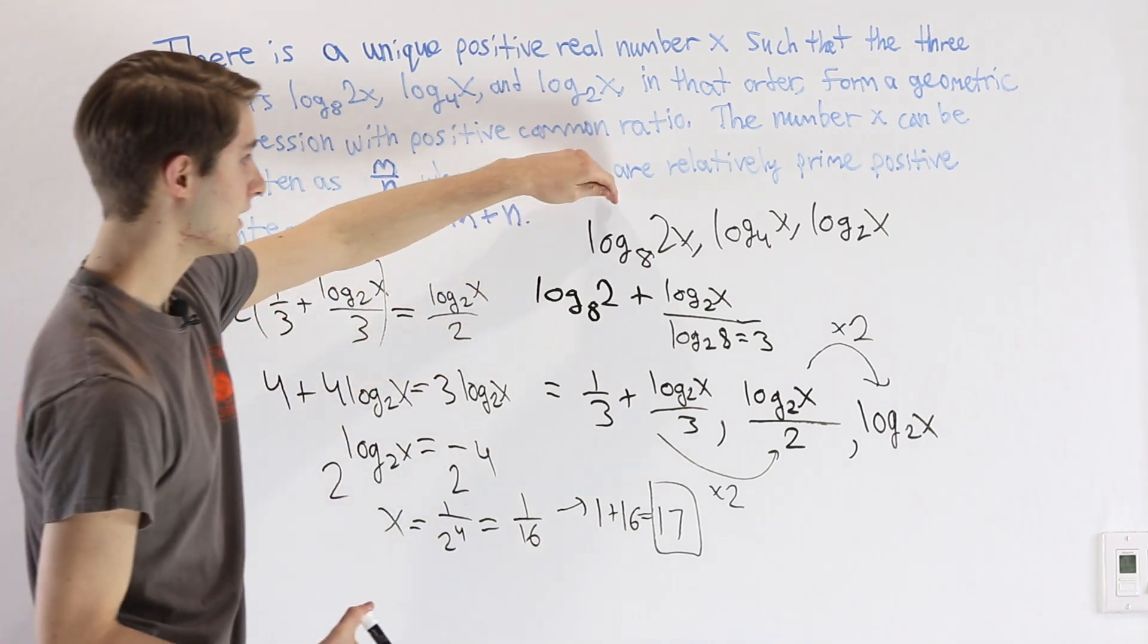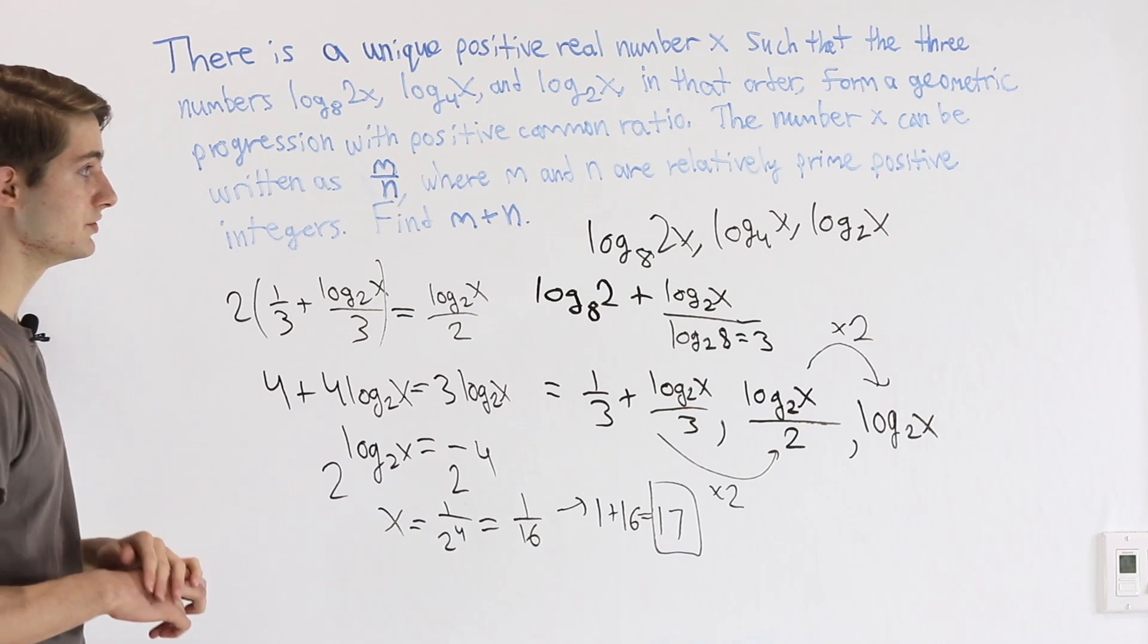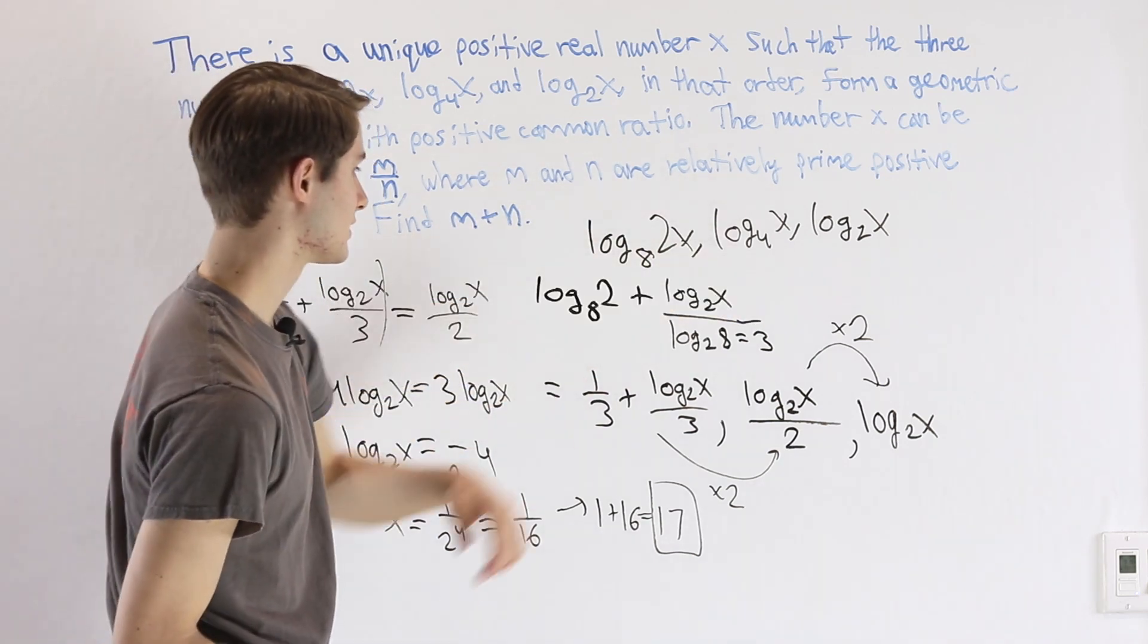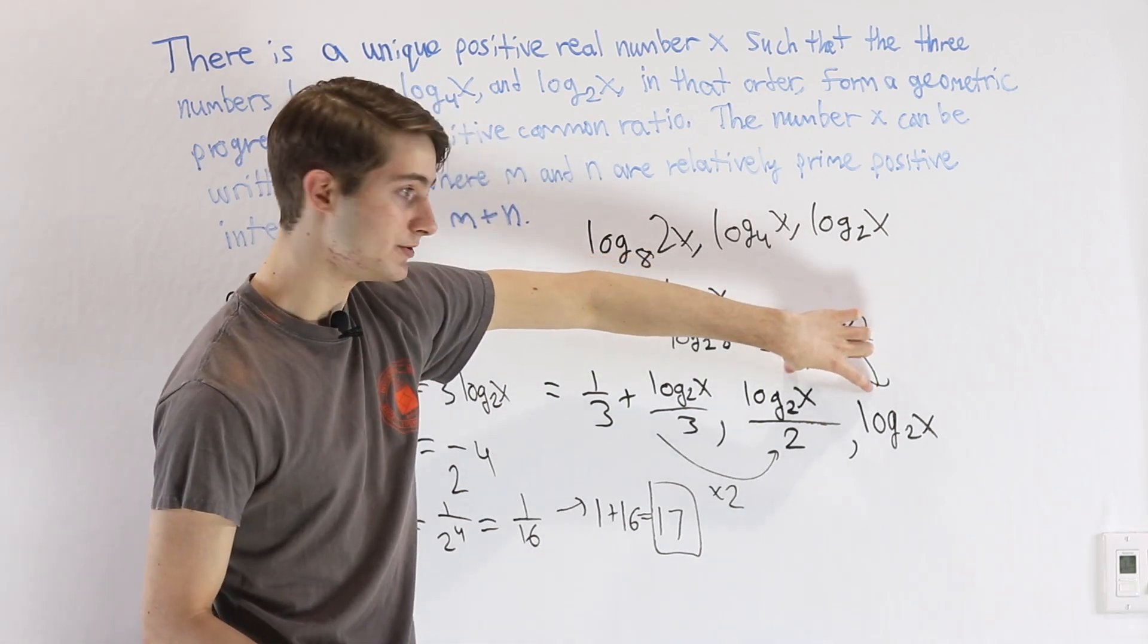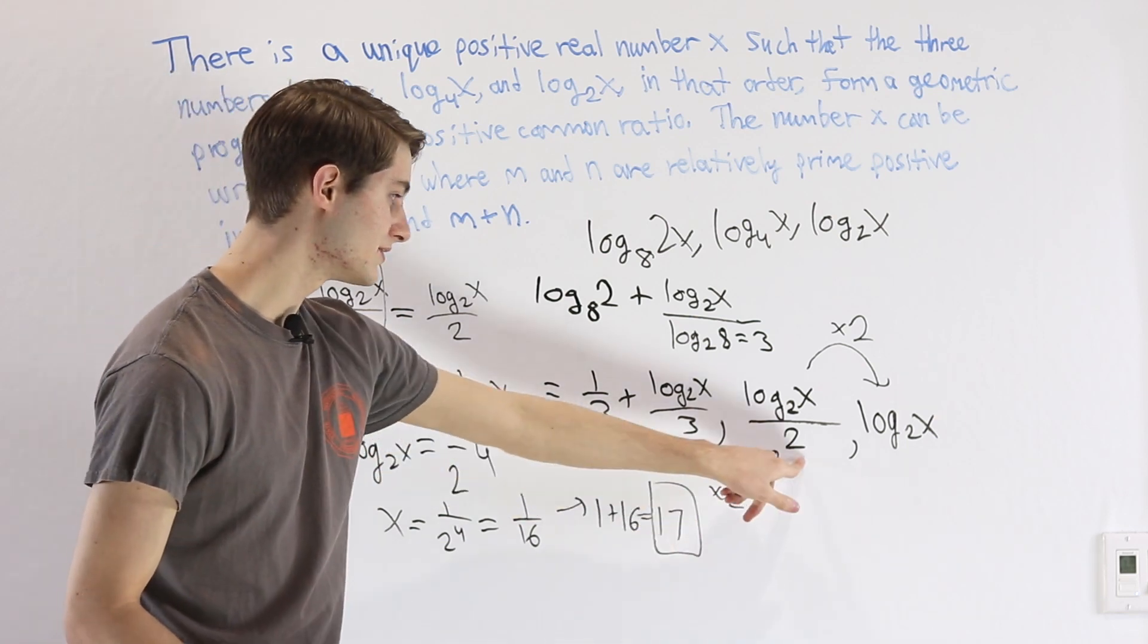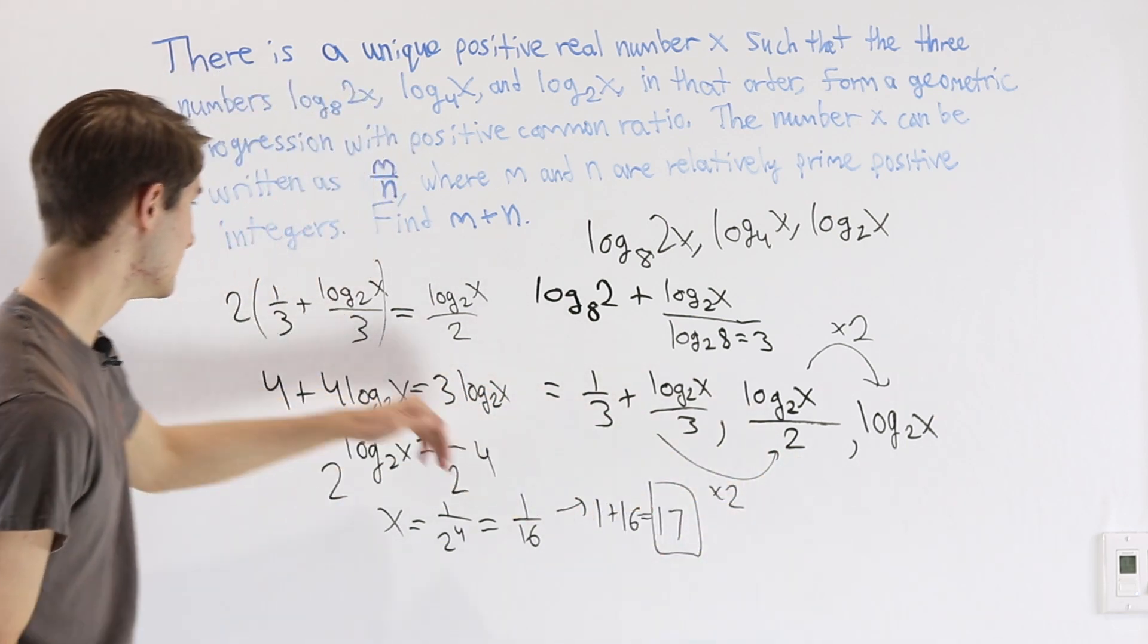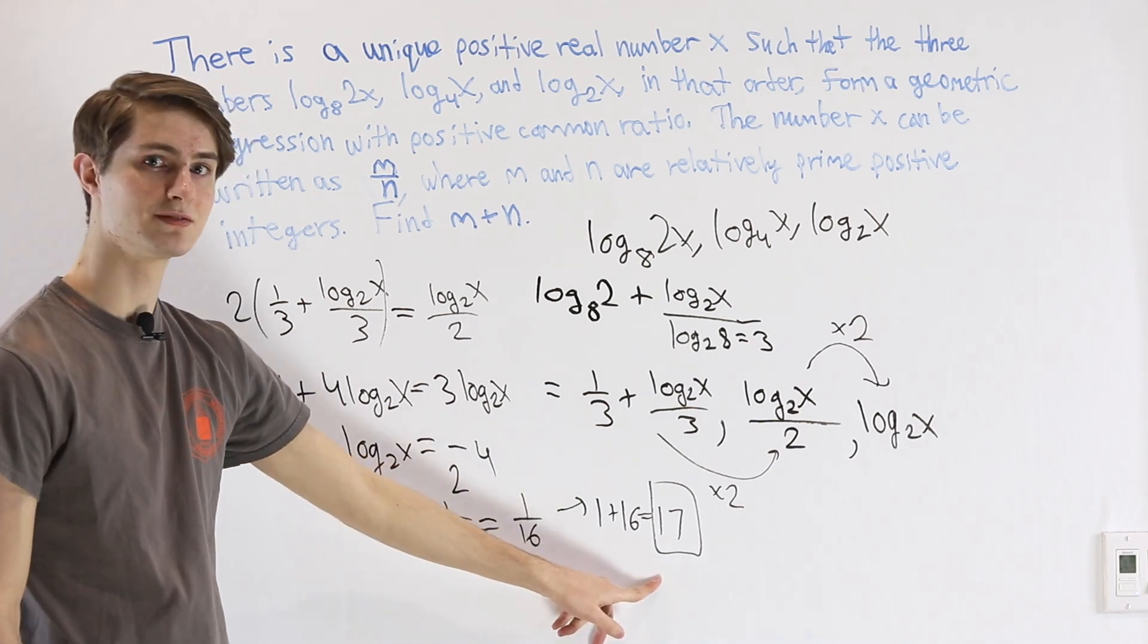So the way we got here was looking at our geometric progression of logs and realizing that the best thing to do would be to put all the logs in a common base of 2. Once we did that, we could see pretty clearly the common ratio in our sequence from these last two terms, and then we can use the fact that the second term is double the first to set up a simple log equation, do some algebra, and get to our answer just like this.